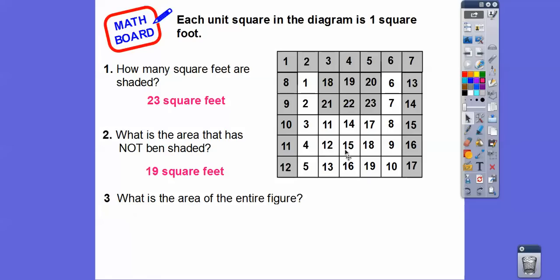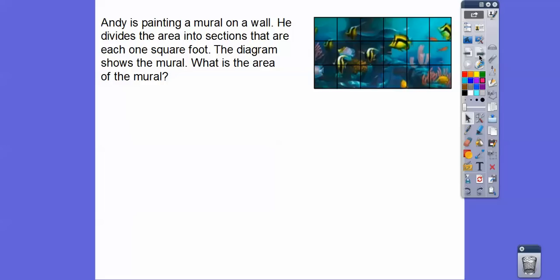So what's the area of the entire figure? Well, it's going to be, you can count them all up or you can just add these two numbers, 23 plus 19. So I know 23 plus 20 is 43. So 23 plus 19 is 42 and less than that. 42 square feet. Don't forget the square feet. Always area problems always end in square units. So in this case, it was square feet right here.